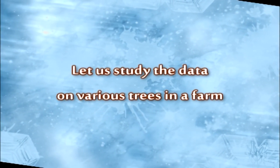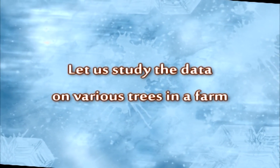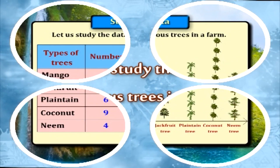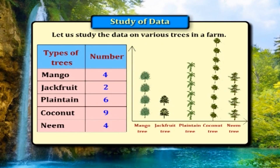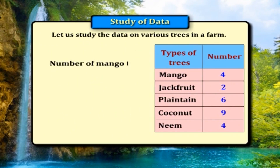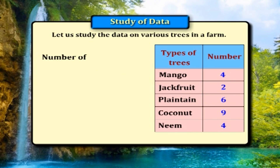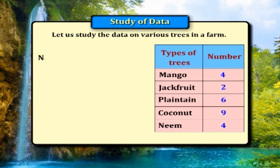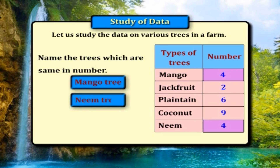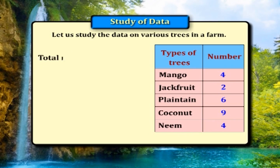Let us study the data on various trees in a farm. Number of mango trees? 4. Number of jackfruit trees? 2. Number of neem trees? 4. Name the trees which are same in number — mango and neem. Total number of trees in the farm? 25.